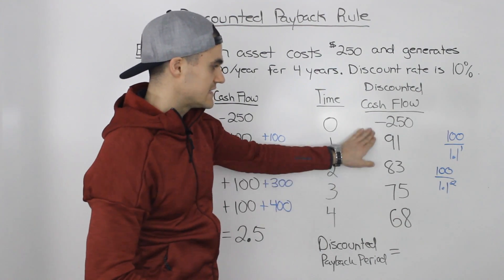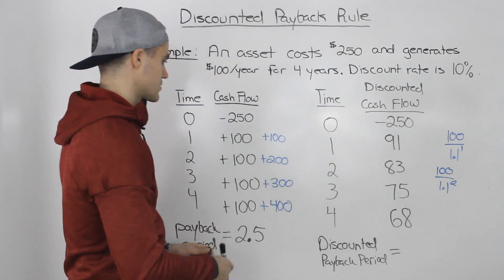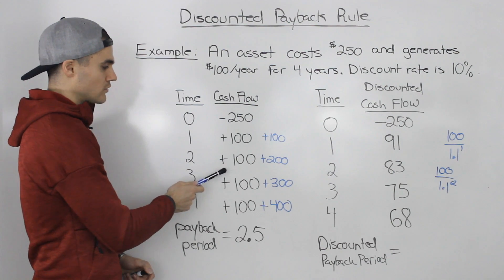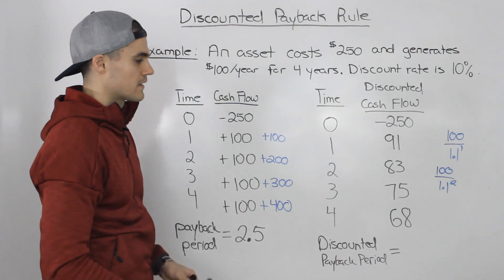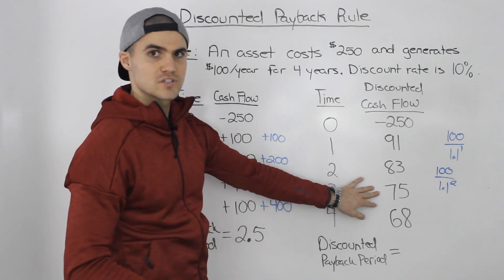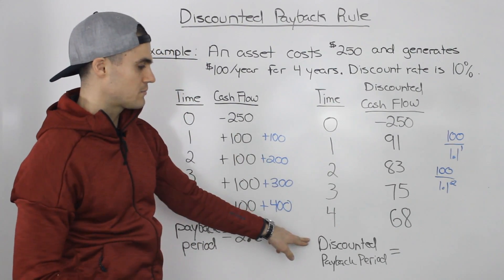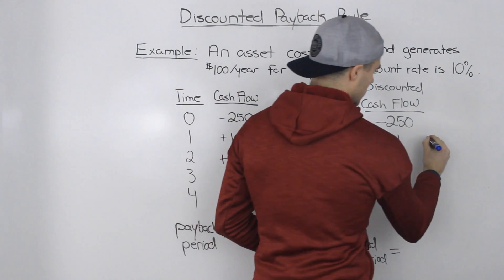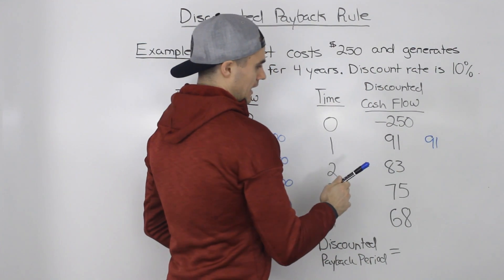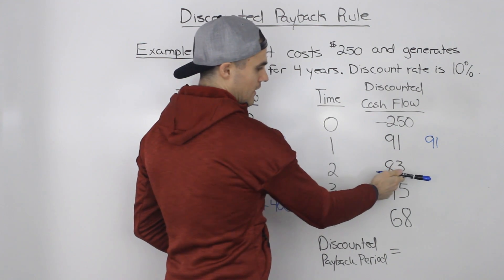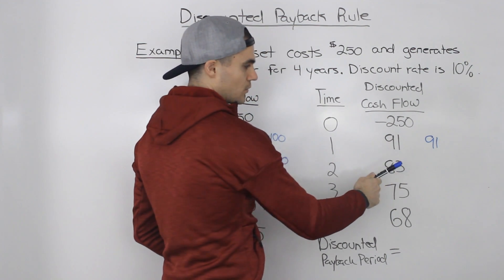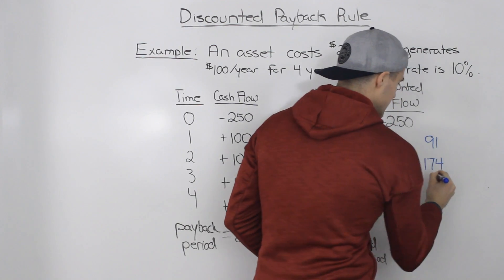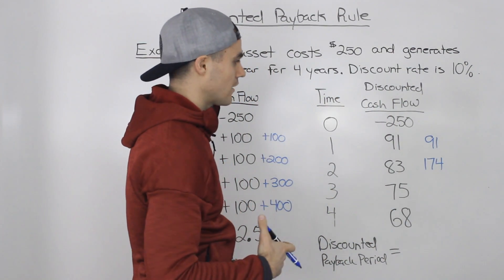These represent the discounted cash flows — the discounted future cash flows of the asset from year one to year four. Now we follow the same steps to find the discounted payback period. In year one we've recovered $91. In year two, the discounted cash flow is $83, so we add that to $91. In total, cumulatively, we've recovered $174 worth of present value cash flows.